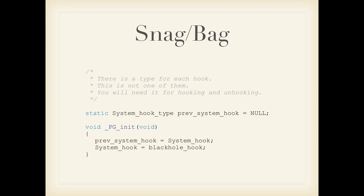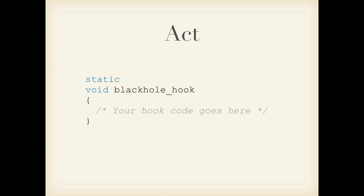This is sort of an example — though not an actual hook yet. When you grab the state of the execution, each hook will have its own data type and you have to persist that in a holding variable. So 'previous_system_hook' is now set to the current system hook, and then you assign your 'black_hole_hook' to the current system hook and you're off to the races. This bit could be very small or very large — a little later I'm going to show you a fairly small one that I think is still useful. But if you're replacing the optimizer, there might be a few more lines of code.